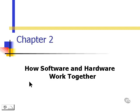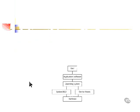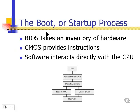Now we're ready to take a look at how software and hardware work together in a computer. Software and hardware first meet each other in what's called the boot process or the startup process — this is when we start the computer. At this point, BIOS takes an inventory of all the hardware. CMOS provides instructions on how hardware and software will work together, and software interacts directly with the CPU.